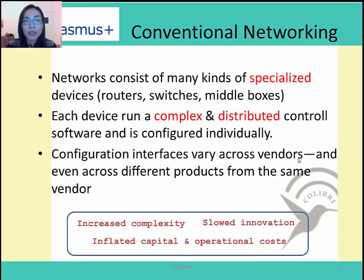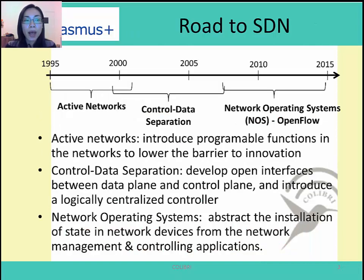Thus, these characteristics of the current network lead to increased complexity, slowed innovation, and inflated capital and operational cost. That's why a lot of new ideas have been proposed to cope with the limitations of the current network, which finally led to software-defined networking.